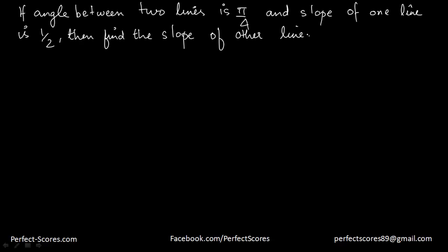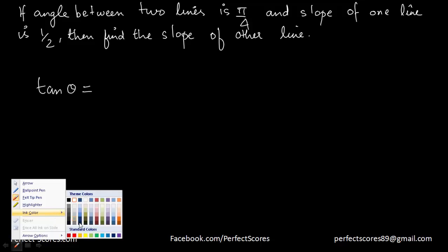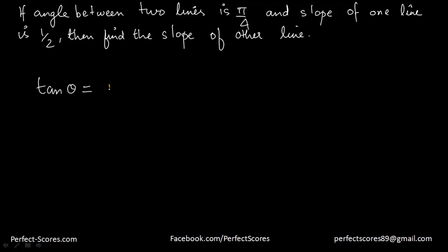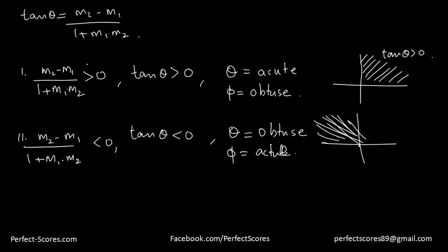Let's use an example. The question says the angle between two lines is π/4, which is an acute angle. So the formula gives tan(θ) = (m2 - m1)/(1 + m1·m2). Since the angle is acute, this expression must be positive, so we place a modulus sign: |( m - 1/2 )/(1 + (1/2)m)| = tan(π/4).